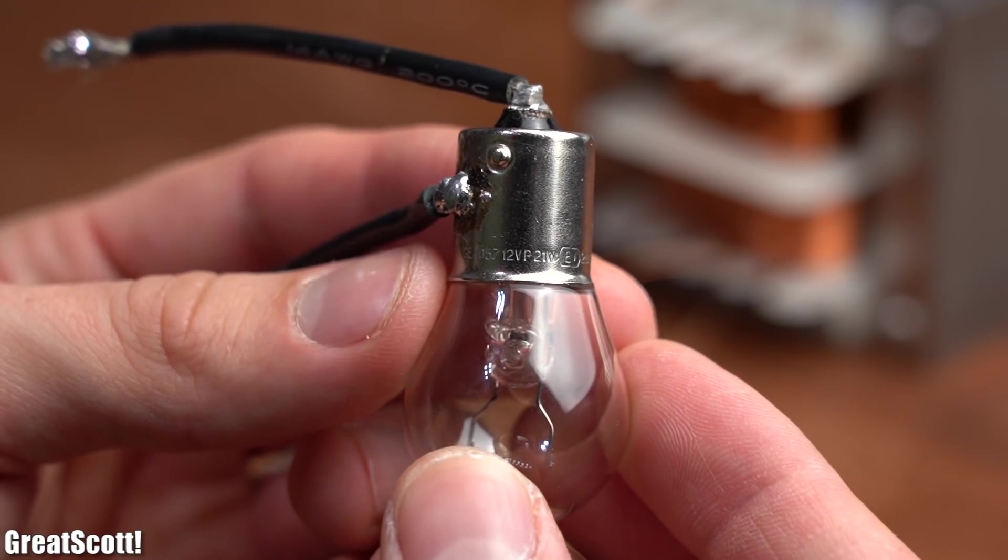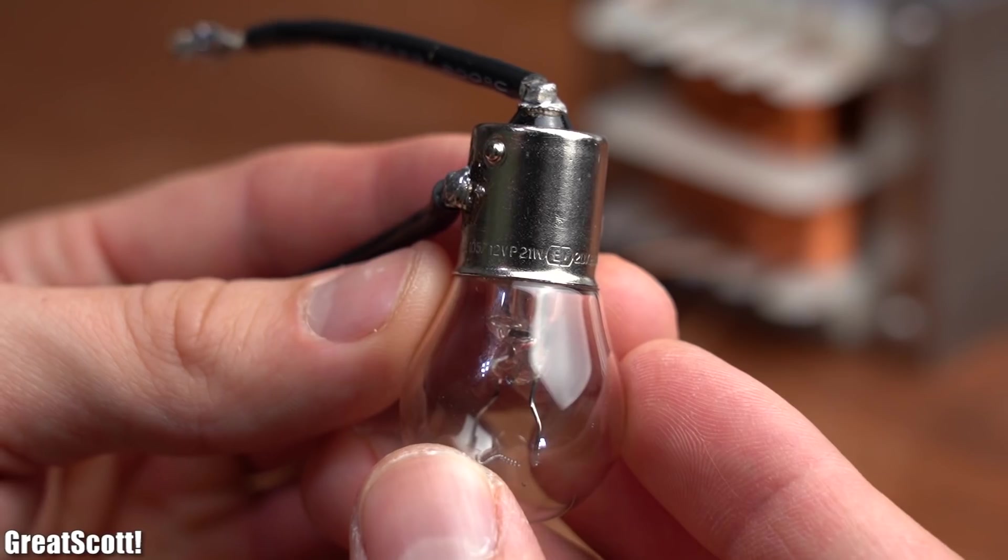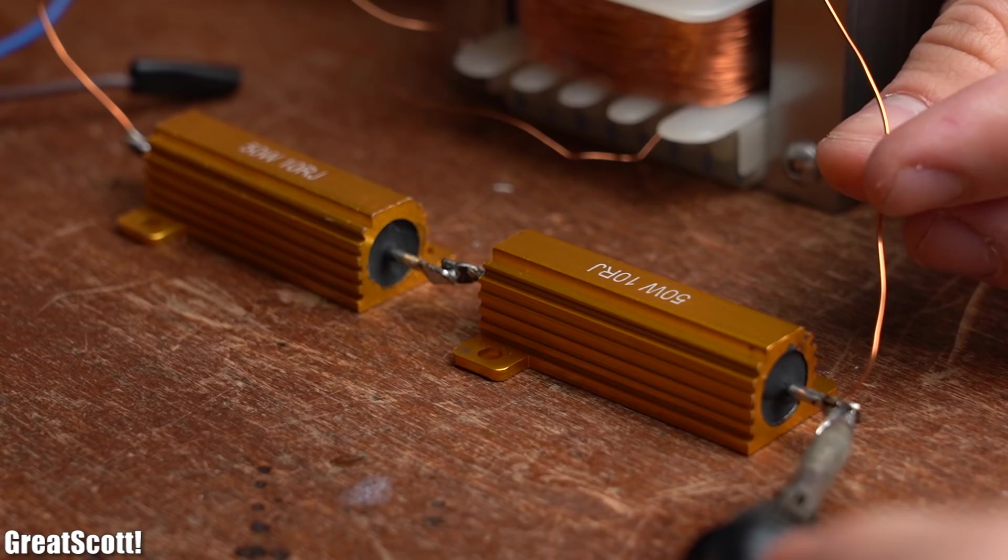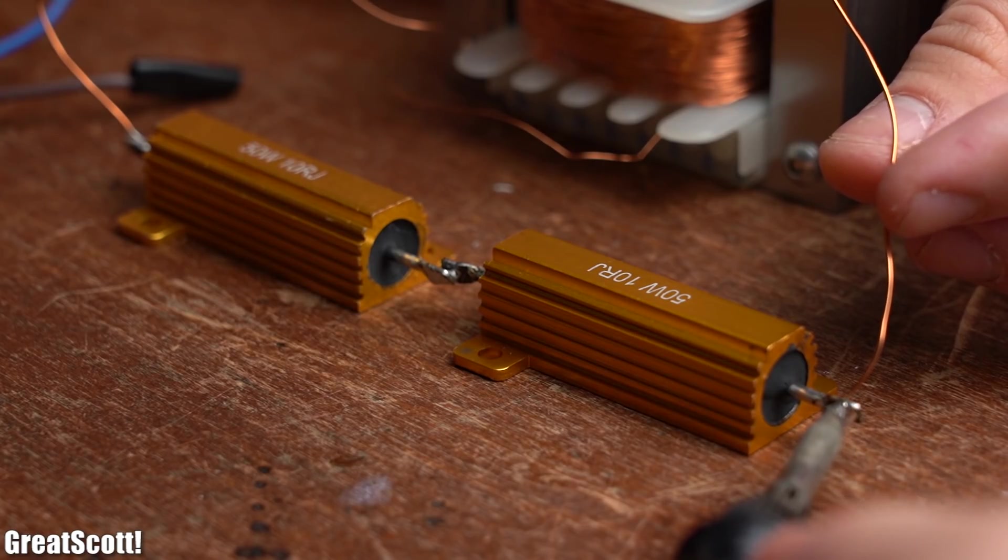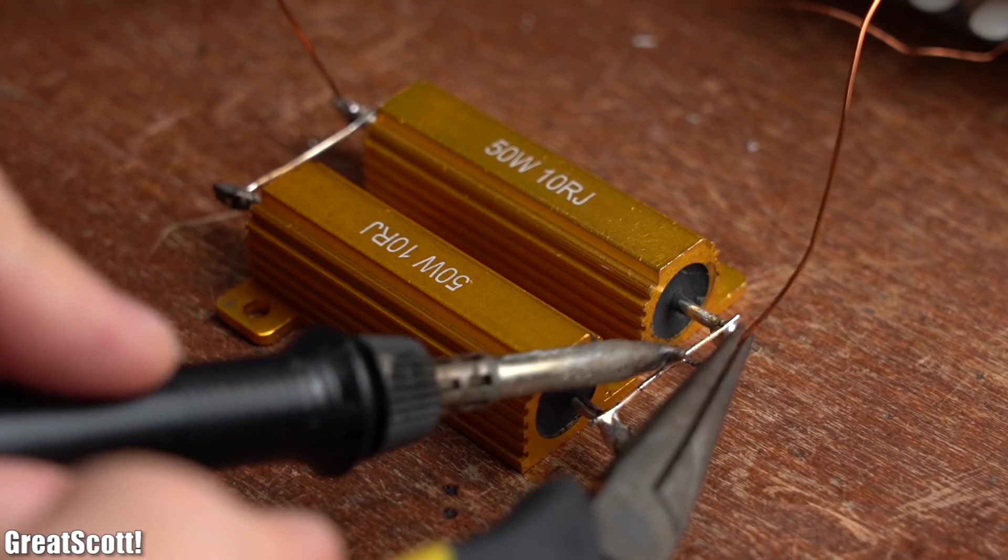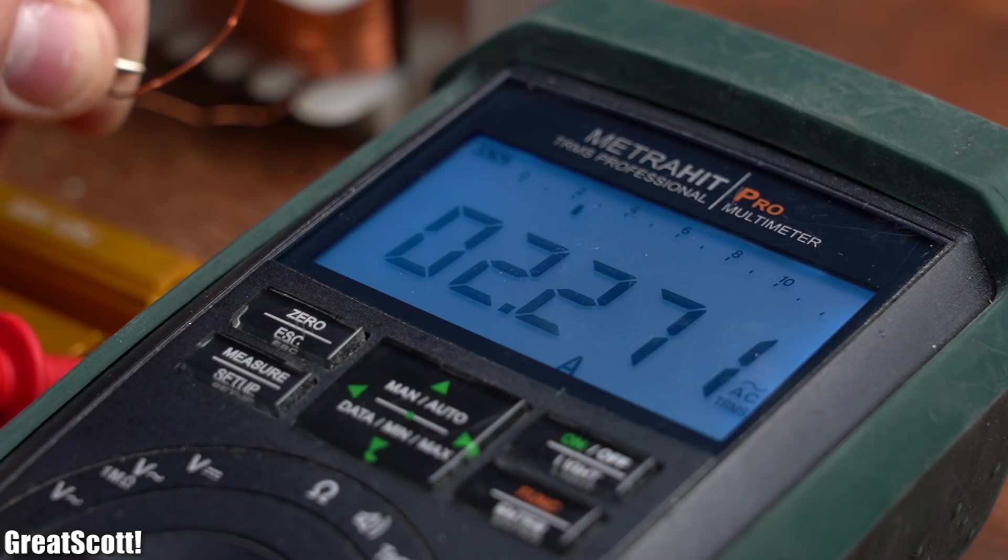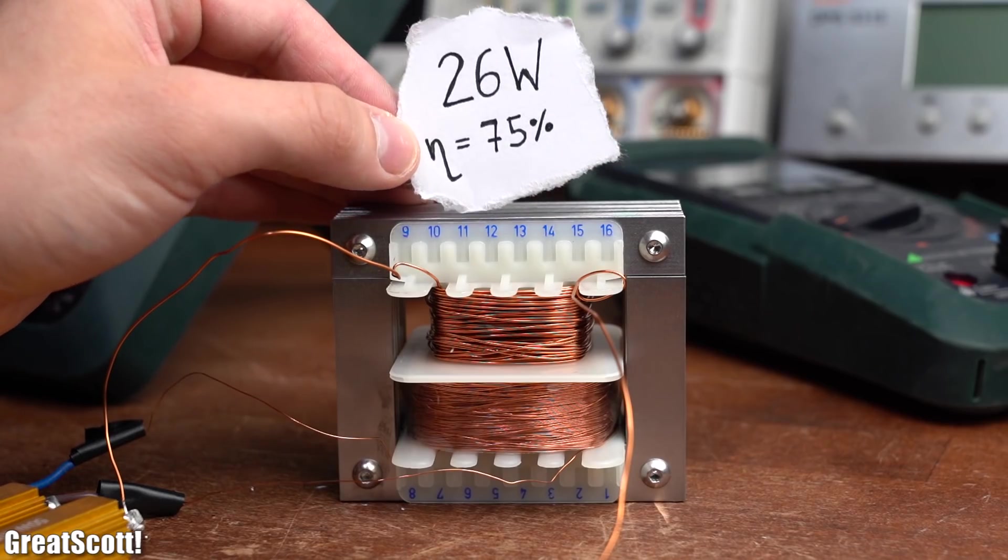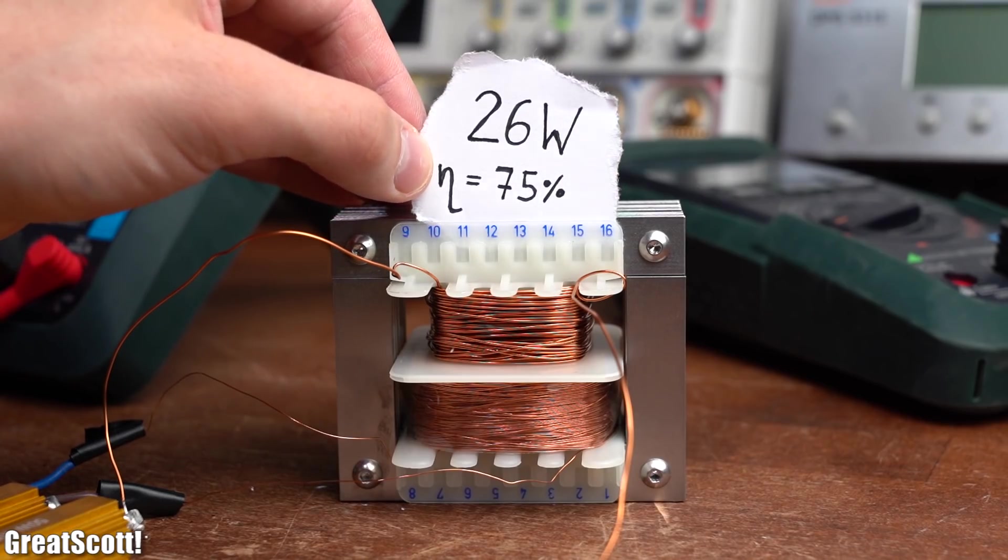As a first test I used this 12 volts 21 watt light bulb which lit up without any problems. But to be more scientific I used a 20 ohm, 10 ohm and 5 ohm resistor, an energy meter and a multimeter to draw up to 26 watts on the secondary side and reach an efficiency of around 75%. I would say that is not half bad for such a non-ideal DIY attempt.